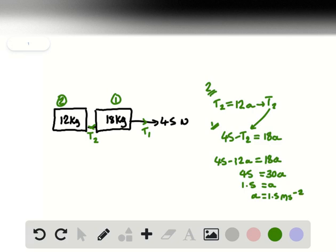What else can we work out? Well, immediately we should think of T2, the tension in the rope between the two wagons. T2 here is equal to 12 times the acceleration, so 12a is 12 multiplied by 1.5, and 1.5 times 12 is 18, so 18 newtons exists between the two wagons.